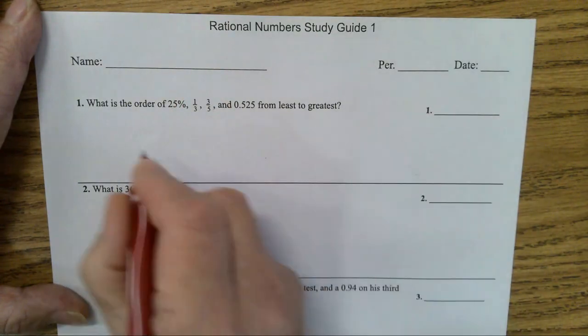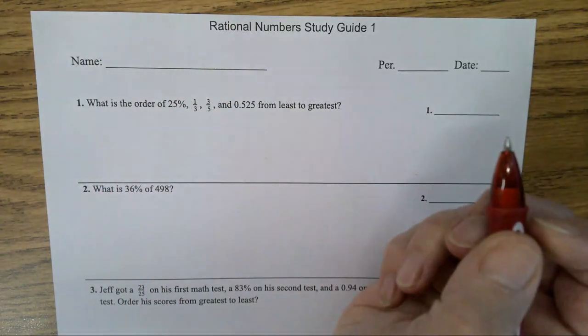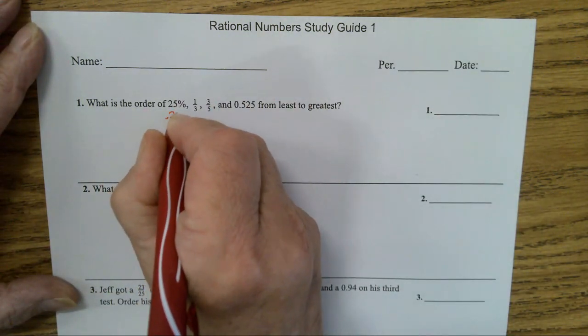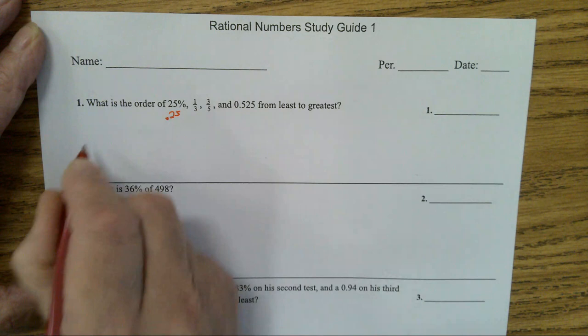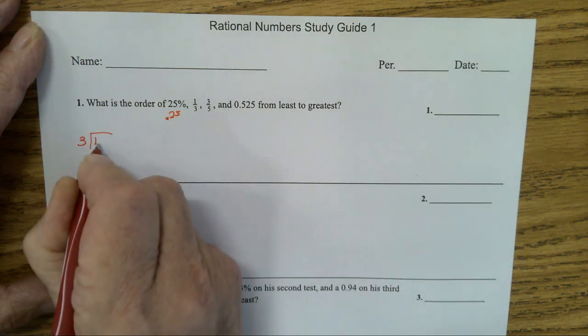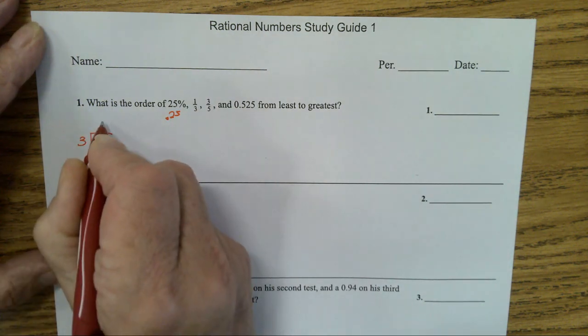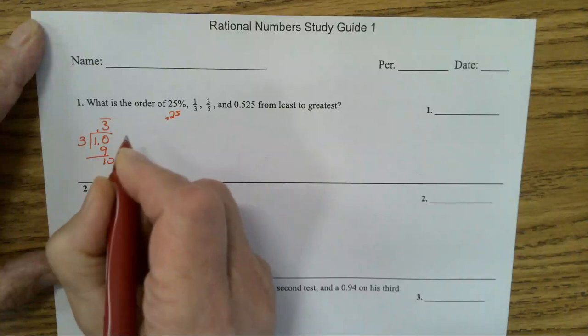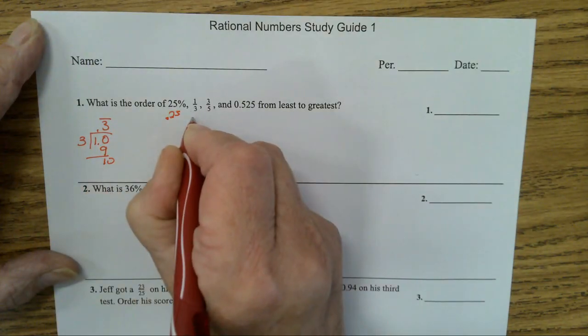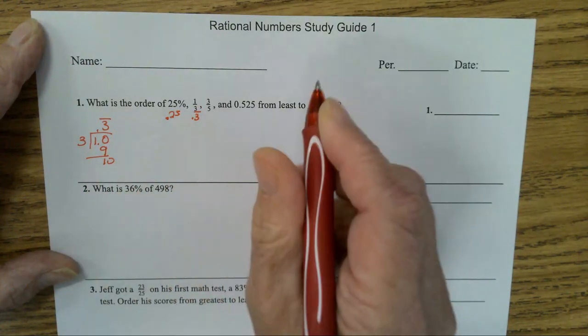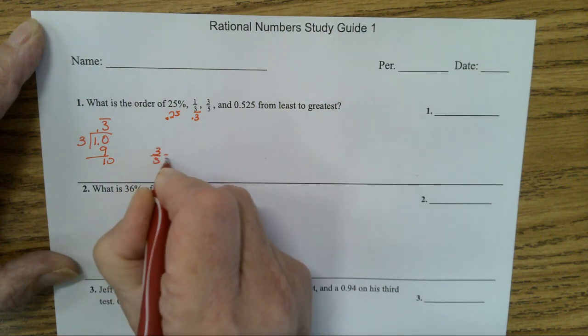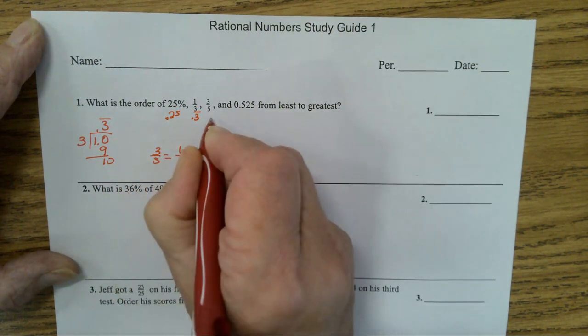I'm going to recommend you change them all to decimals. 25% is 0.25. One-third - one divided by three - is 0.3 repeating, it's going to go on forever. So 1/3 is 0.3 repeating.